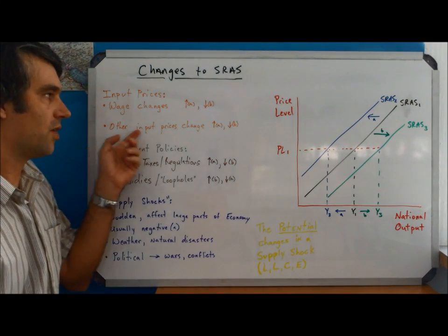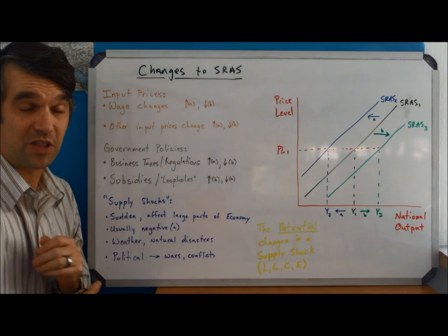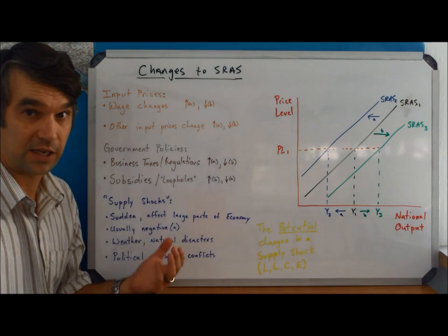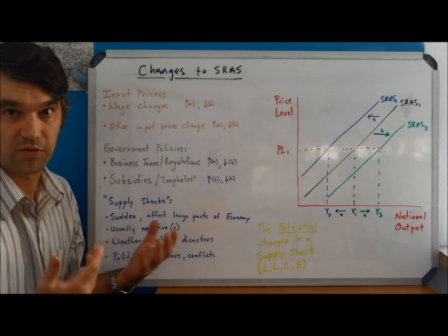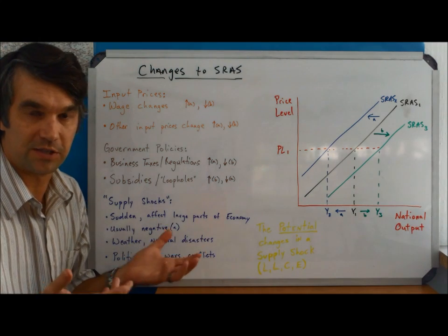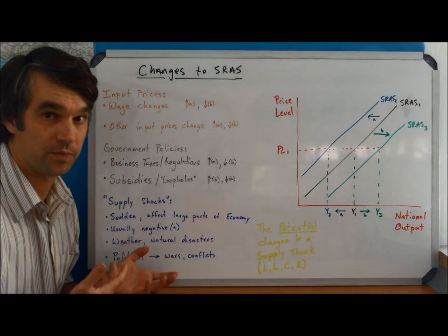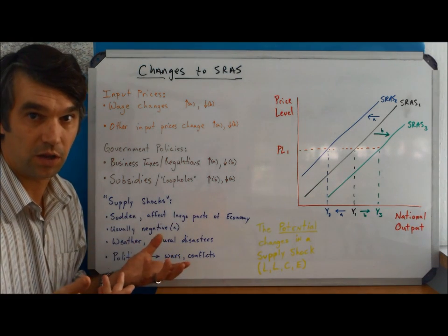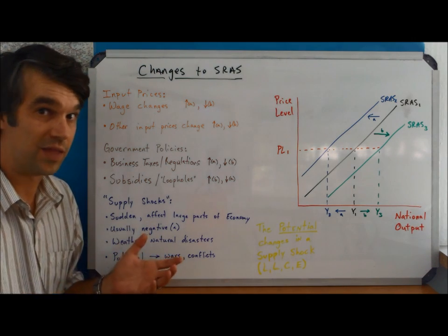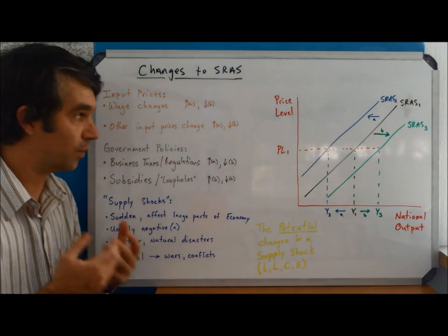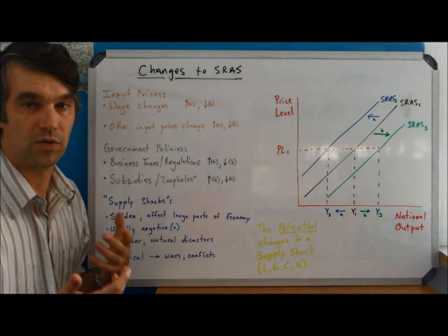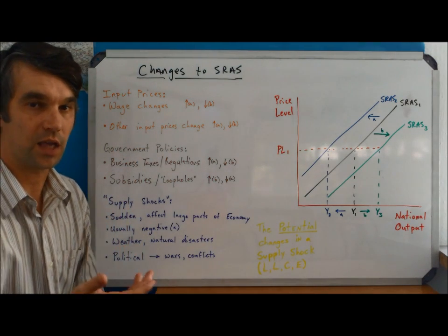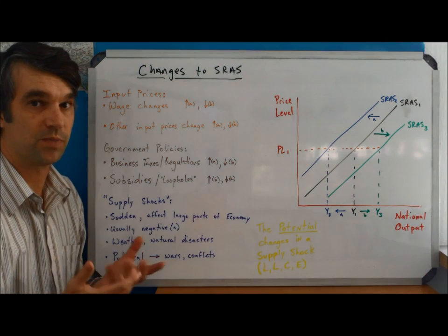The same is going to be true if other input prices change. Probably the most common of those, as I stated in the last video, is oil prices. If we see the price of gasoline go up or down dramatically, that's going to affect transportation, and pretty much all businesses rely on transportation. Obviously, if it's something specific, if we're a nation that is highly industrial, I'm thinking of Japan right now, and they import steel. If the price of steel changes, that's really going to affect how they do things. As always, we need to keep context of which country we're talking about and what sort of inputs might be important to them.